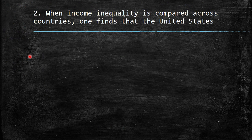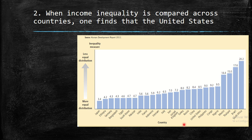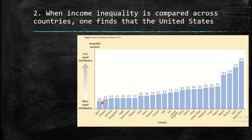The second question says: when income inequality is compared across countries, one finds that the United States... Here we have the table from the chapter where the x-axis shows countries and the y-axis shows inequality measures. The closer you are to 0, the more equal the country. The ratio used is the top fifth divided by the bottom fifth — a higher ratio implies a more unequal country.